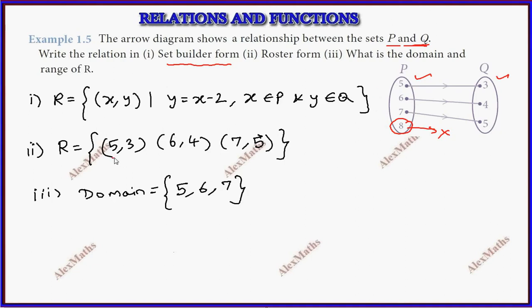So the domain is {5, 6, 7}, and the range is {3, 4, 5}.